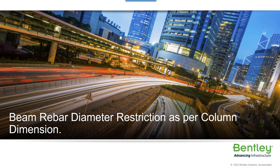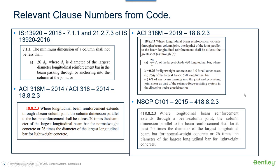Hello everyone. In this video we will understand the diameter restriction which is applicable for ductile beams depending upon the column dimension. As per the clauses of different codes like IS-13920-2016, ACI-318M-2014 (or 2019), and NSCP-101-2015, all codes state that the column dimension should not be greater than 20 times the maximum longitudinal bar diameter in the beam.